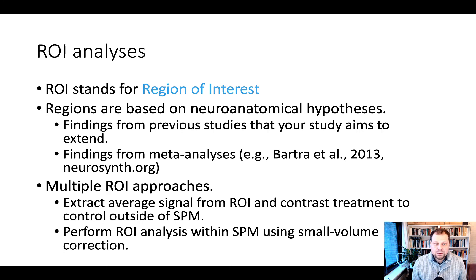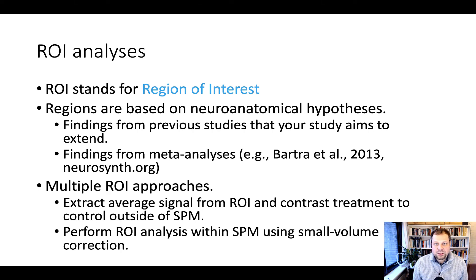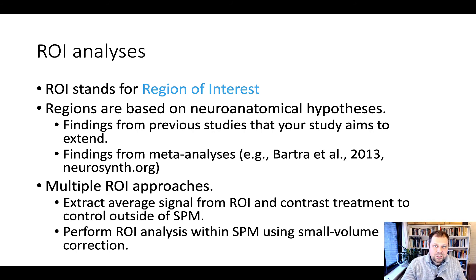There are a number of ROI approaches. One is to take the average signal extracted from your region of interest in two different conditions — for example, your treatment condition and control condition — and compare the effects outside of SPM using other software, such as a simple t-test comparing activation in one condition versus the other. You can also perform ROI analyses within SPM using small volume correction, which restricts the multiple comparisons correction to the number of voxels within your region of interest rather than the entire brain, giving you increased statistical detection power.